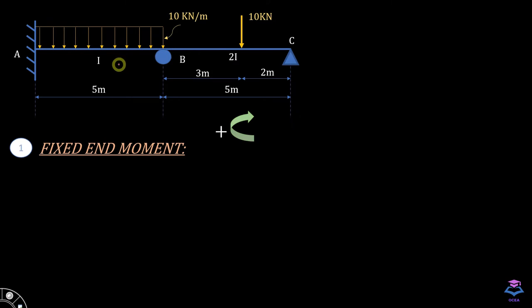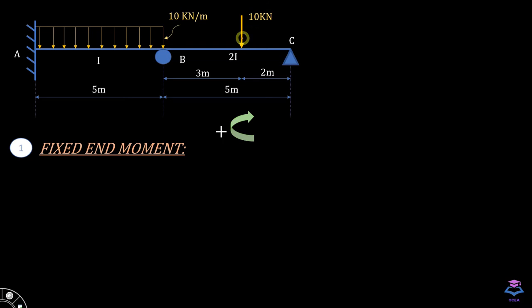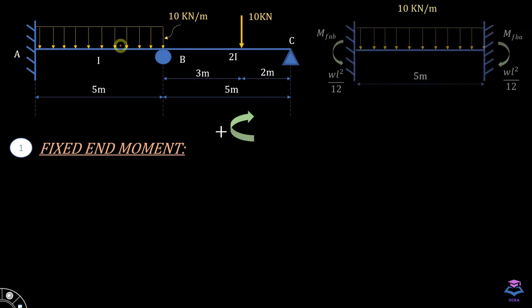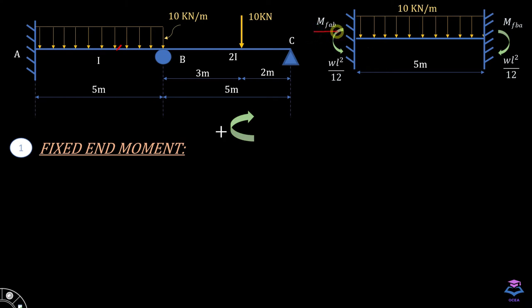In this question, we have a continuous beam consisting of two spans, each span length equal to 5 meters. The first span has a moment of inertia equal to I, and the second span has a moment of inertia equal to 2I. The first span is subjected to a UDL of 10 kN/m, and the second span is subjected to a point load. We consider this member as a fixed-end member and calculate MFAB and MFBA from fixed end moment tables.